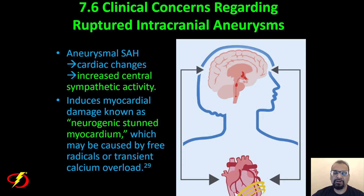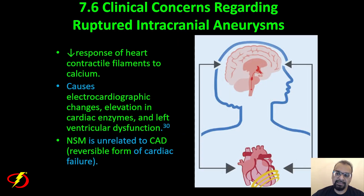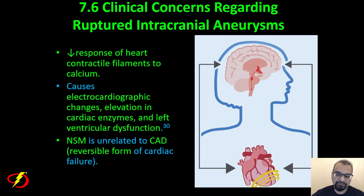Aneurysmal subarachnoid hemorrhage can also cause cardiac changes. Increased central sympathetic activity can induce myocardial damage known as neurogenic stunned myocardium, which may be caused by free radicals or transient calcium overload. Neurogenic stunned myocardium has a specific EKG pattern: a prolonged QT interval and massive T wave inversion. This results in decreased response of heart contractile filaments to calcium, causing EKG changes, elevation in cardiac enzymes, and left ventricular dysfunction. Neurogenic stunned myocardium is reversible — unlike coronary artery disease.